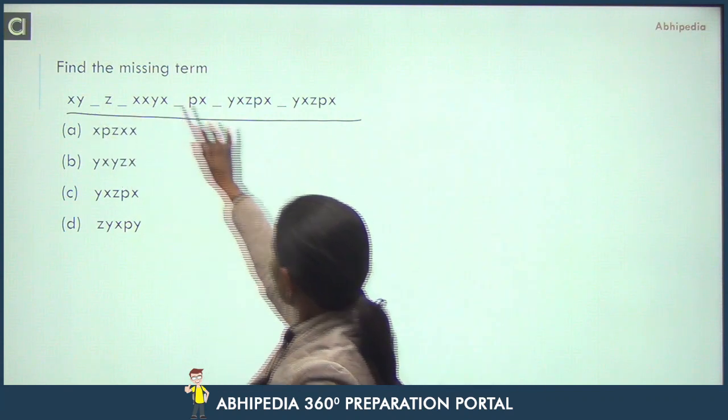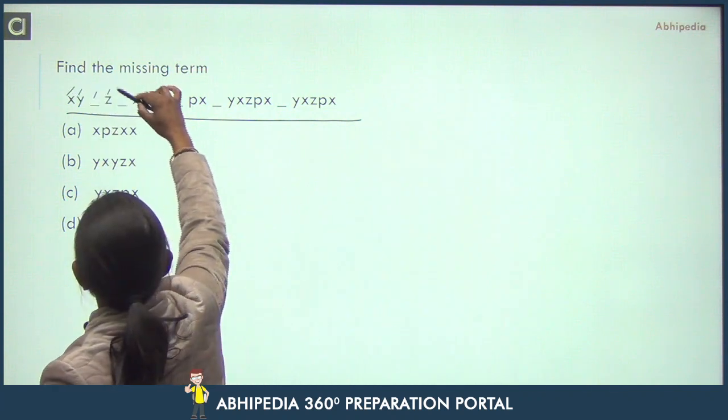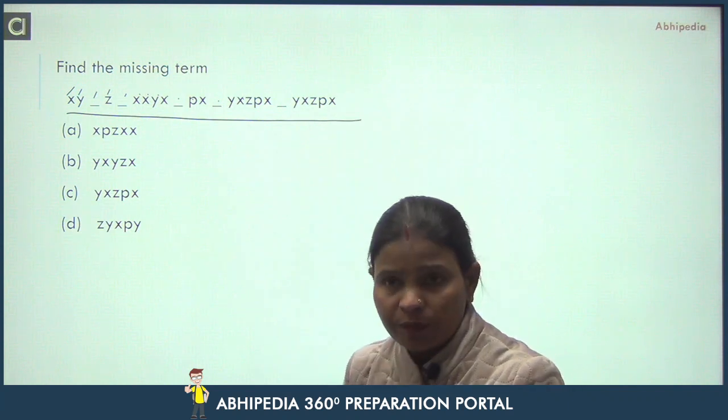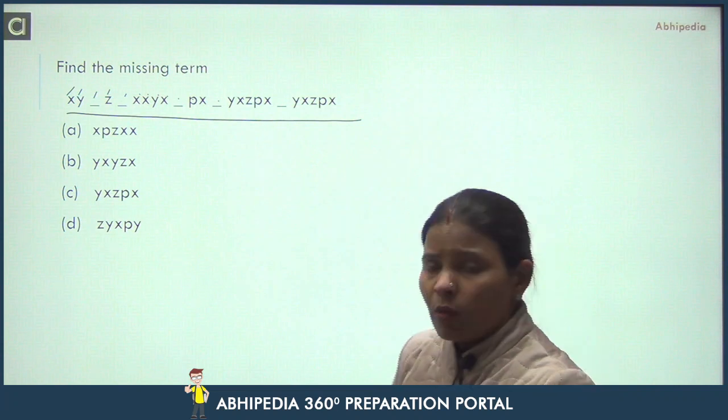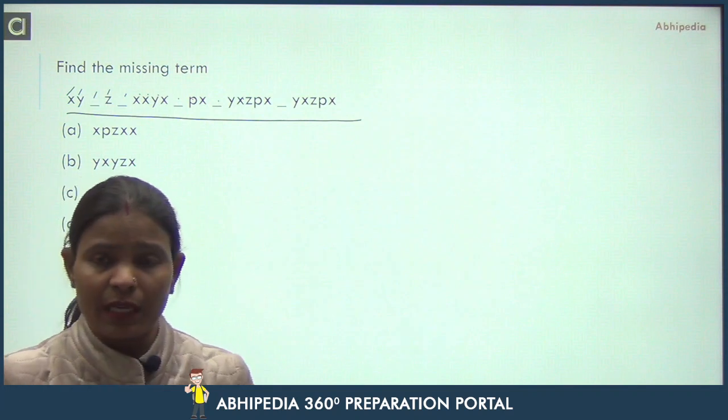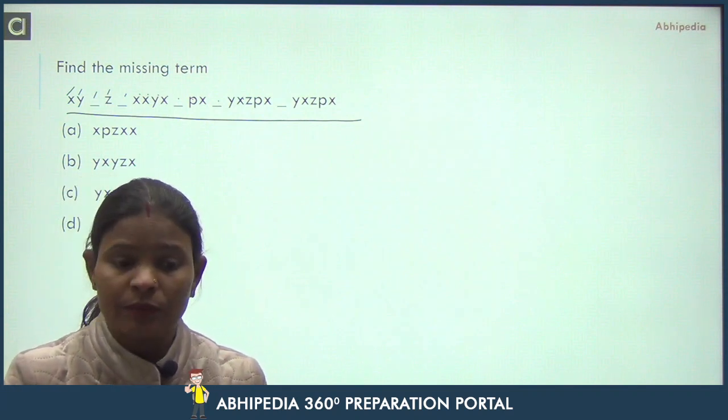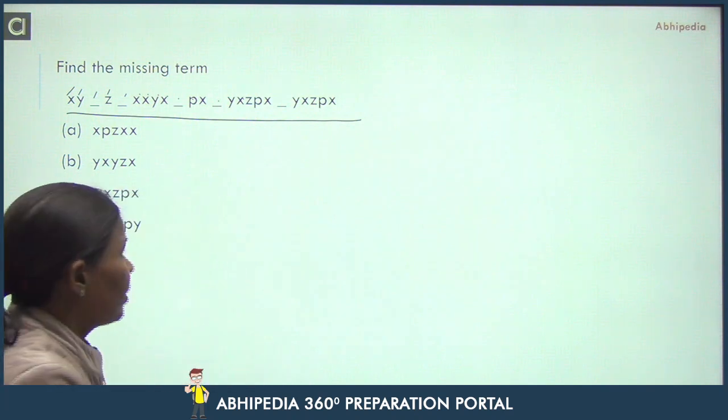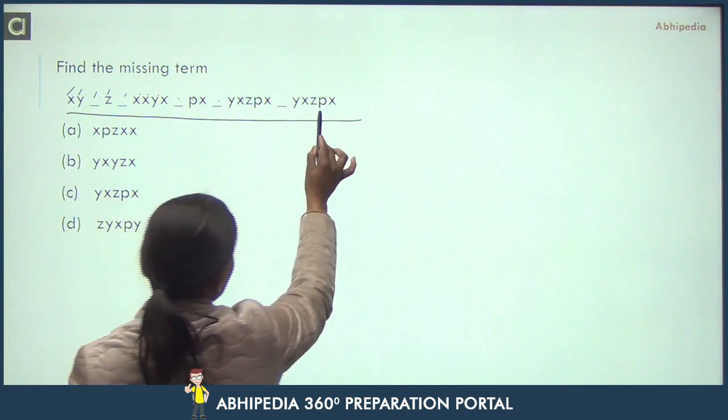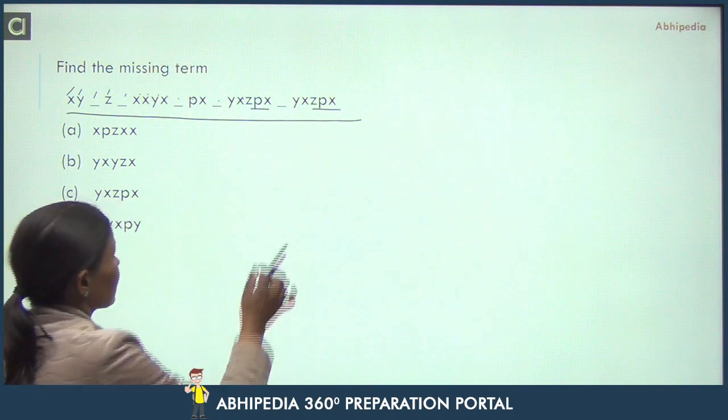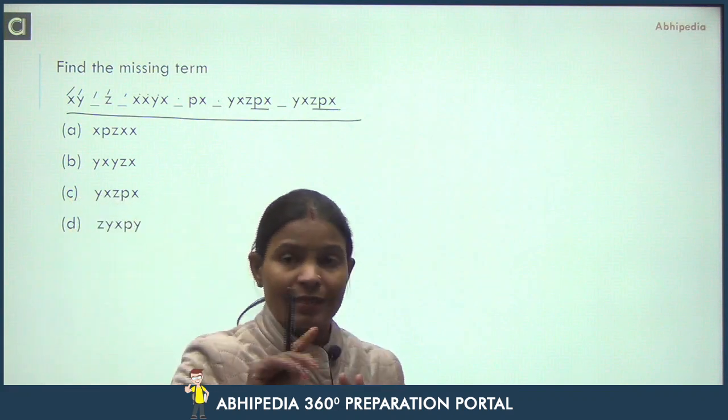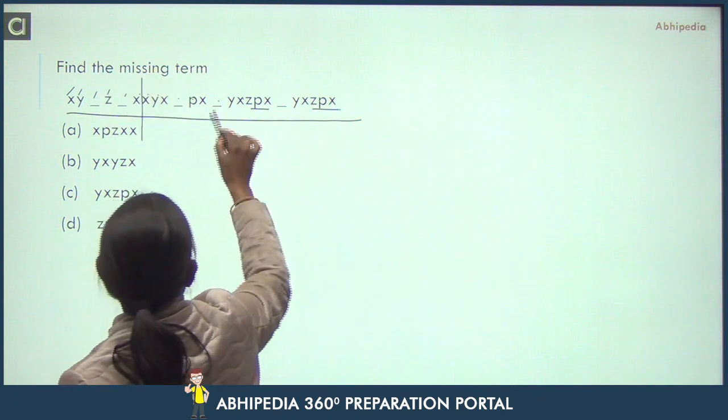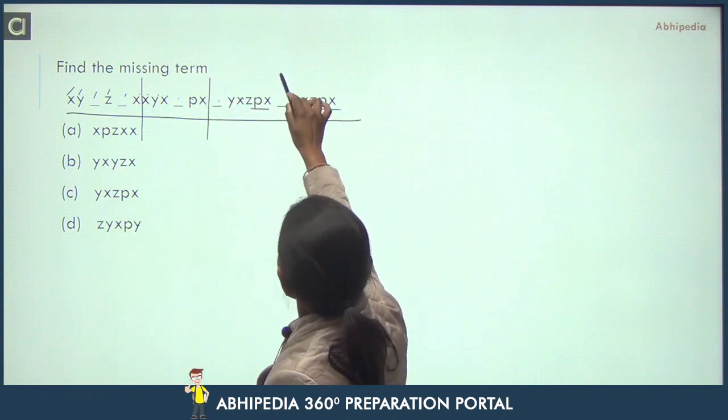To find the pattern, first see how many alphabets are given here: 1, 2, 3, 4, 5, 6, 7, 8, 9, 10, 11, 12, 13, 14, 15, 16, 17, 18, 19, 20, 21, 22, 23, 24. 24 means pairs can be made in different ways - 3 into 8, 6 into 4, 4 into 6. We need to see some repetition here. If I can see here, there will be Z, P, X. 6 into 4 pairs can be made. So we are dividing into groups of 4: P, X.